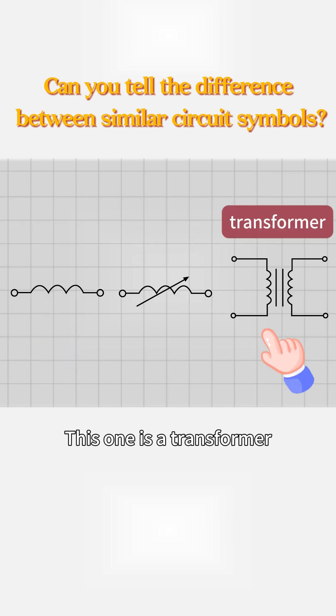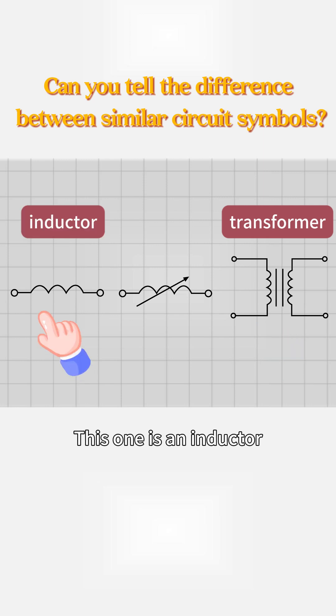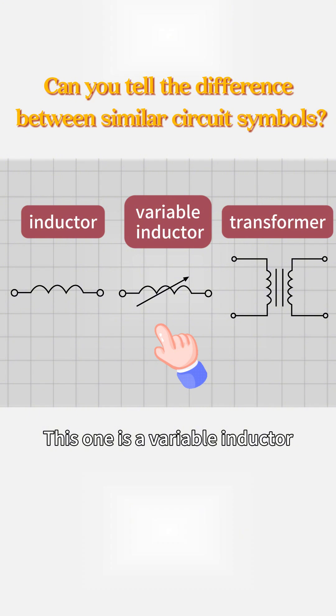Which one is a transformer? This one is a transformer. This one is an inductor, storing magnetic energy and blocking AC while passing DC. This one is a variable inductor, marked with an arrow.